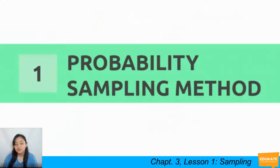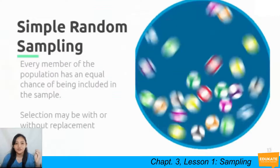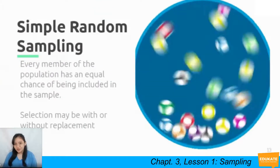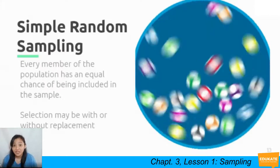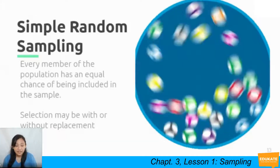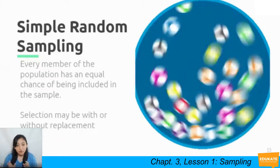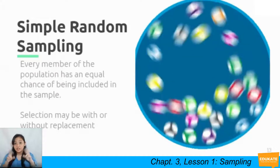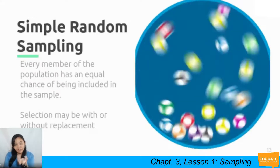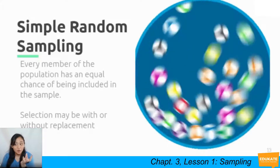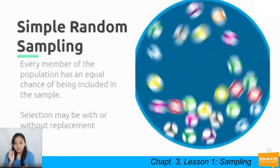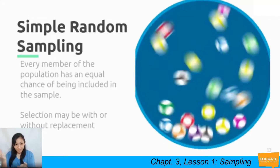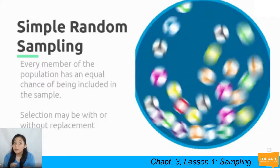Under probability sampling, the first method is simple random sampling — also called the lottery method or fishbowl method — because every member of the population has an equal chance of being selected. Selection may be with or without replacement. For example, if I have all my students' names in a bowl and I need 20 respondents, drawing 20 names without putting them back is sampling without replacement. If I draw one name, place it back, then draw again, that is sampling with replacement.